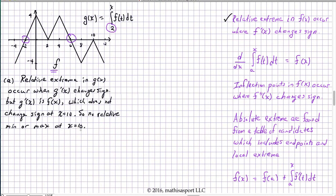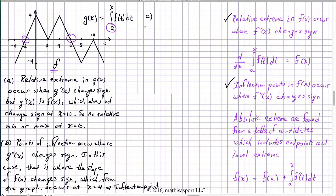There is no relative minimum or maximum at X equals 10. Part B is a similar question about points of inflection. Points of inflection occur where the second derivative of the function in question changes sign. The first derivative of G of X is the graph of F, so the second derivative of G of X is the slope of F.